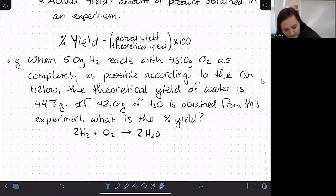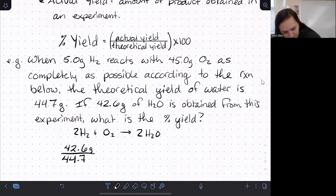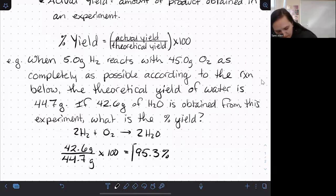So all we need to do to find our percent yield is take our actual yield, which was 42.6, divide it by our theoretical yield, which was 44.7, and multiply that by 100. And of course, I conveniently forgot to do this in advance. Cool. So that is about a 95.3 percent yield, which is pretty darn good.